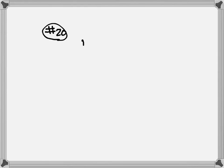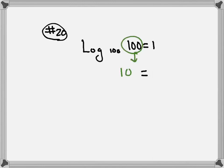Let's look at number 20. We have log base 100 of 100 equal to 1. So again, we're going to change from log to exponential. Keep the equal sign. The 100 is in the x position, 100 drops straight down. The little 100, that's your base. So that little 100 going real fast to the other side, it becomes big 100. Then after that, you bump the 1 up to become the exponent.